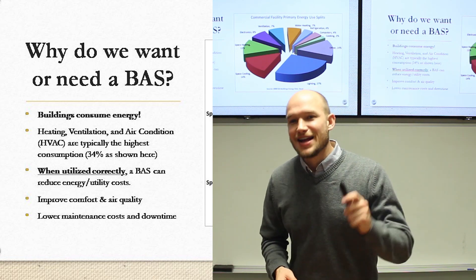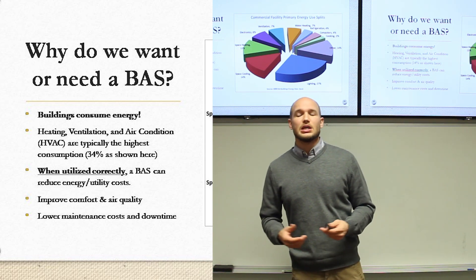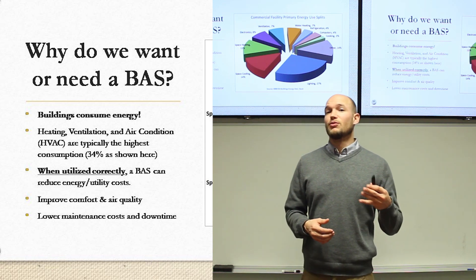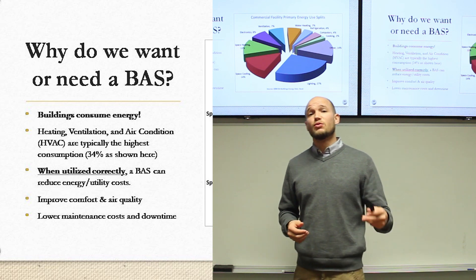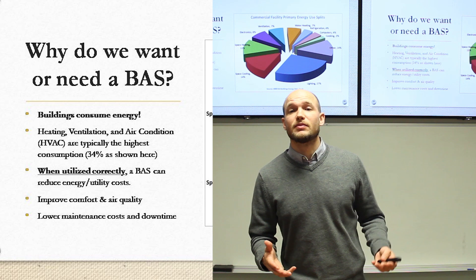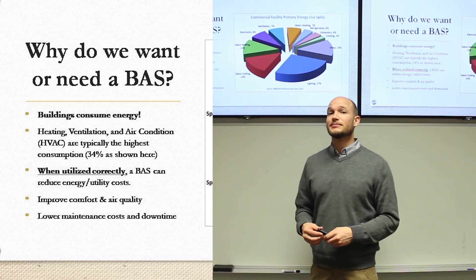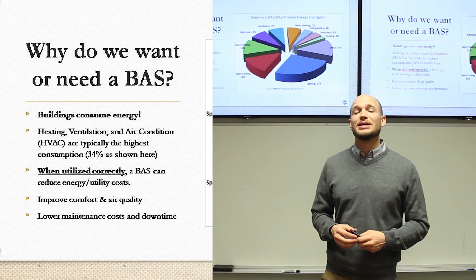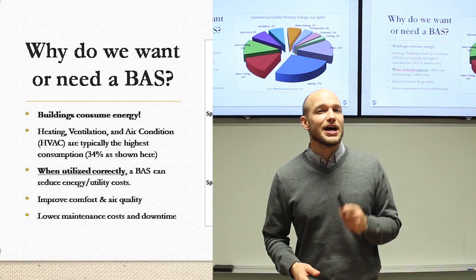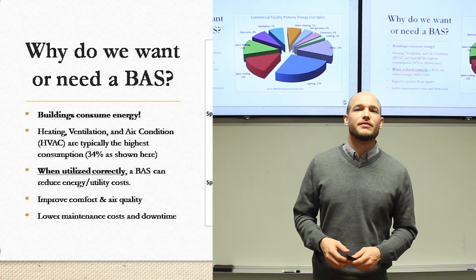When utilized correctly — notice that's underlined and bold — because when it's not utilized correctly, these systems can actually cost you more money. For example, a user goes in and overrides a room or even the whole building to 72 degrees heating, forgets about it, goes home at night, and the system runs day and night at 72 degrees heating for days, weeks, even months before someone notices. Those overrides can definitely get tricky.